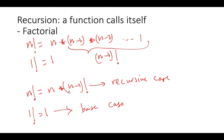And this is called the base case. A recursive function needs to have one or more recursive cases, and one or more base cases. And since this is going to end up with a function calling itself, we need to make sure that every call to the function brings us closer to the base case.